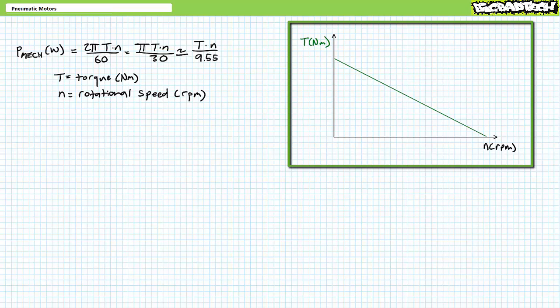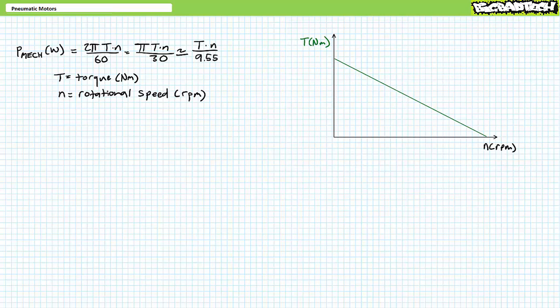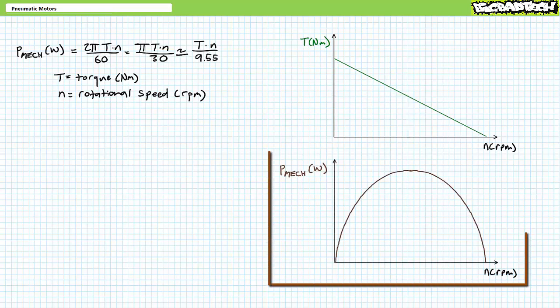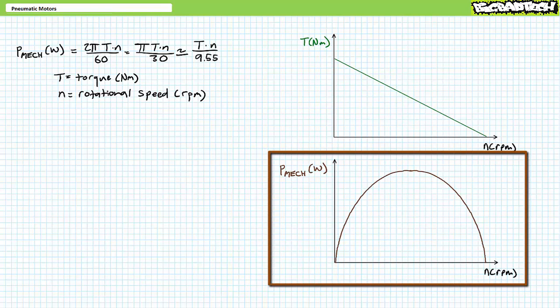The speed-torque curve for a general purpose air motor at a specific load-induced pressure looks something like this. Note the qualifier 'at a specific load-induced pressure.' One can use the speed-torque curve to determine a specific motor's working or operating point. One could also plot mechanical power—the product of torque and speed—as a function of rotational speed on another graph. In the case of a general purpose pneumatic motor, mechanical power output in watts plotted as a function of rotational speed forms an almost symmetrical upside-down parabolic arc with peak mechanical power output almost at center.